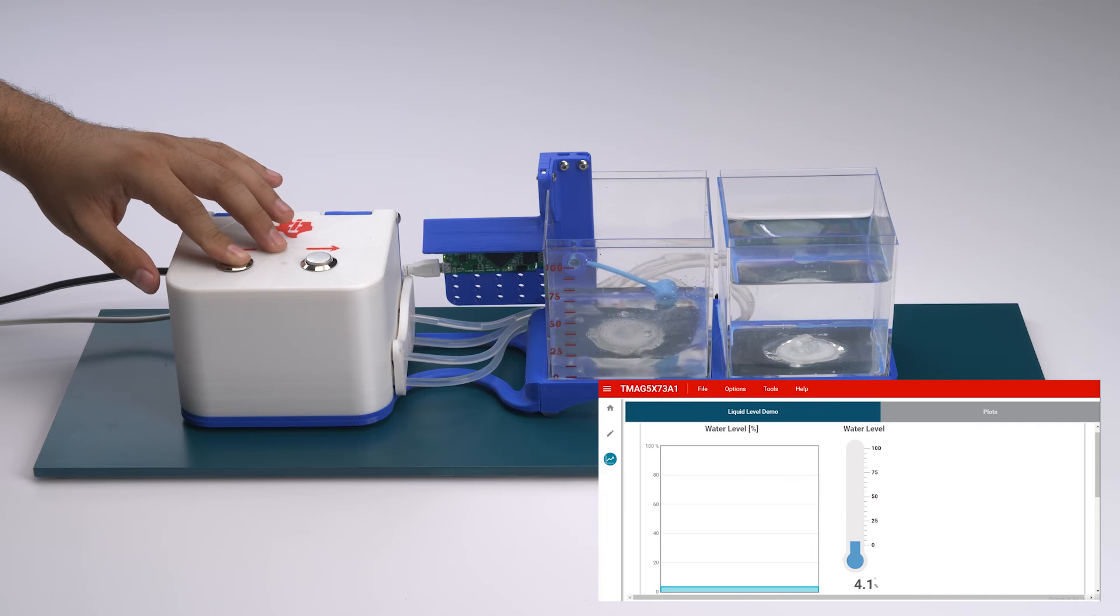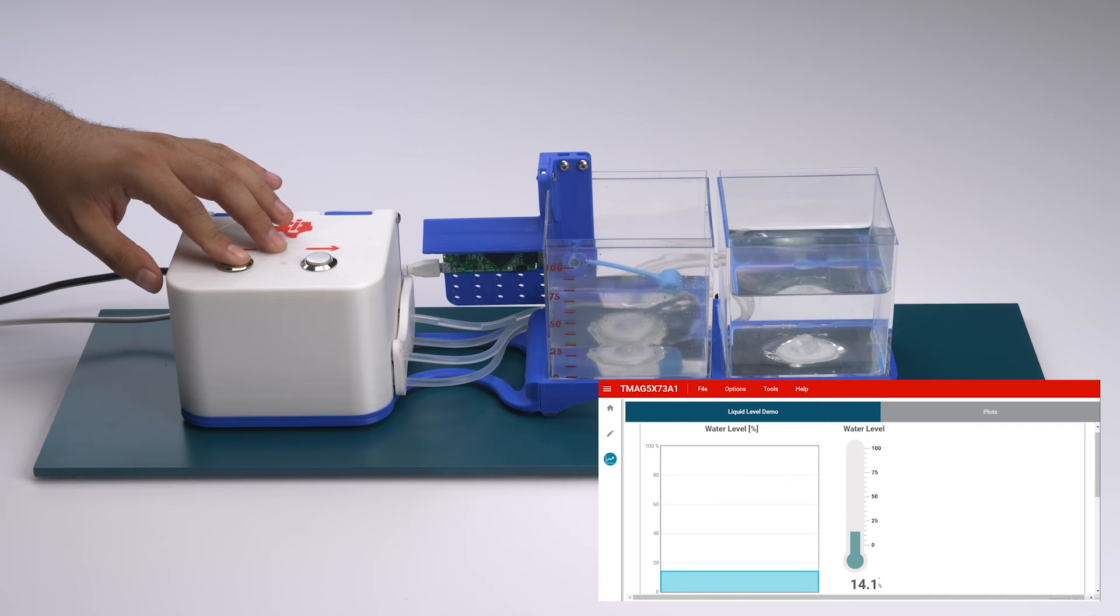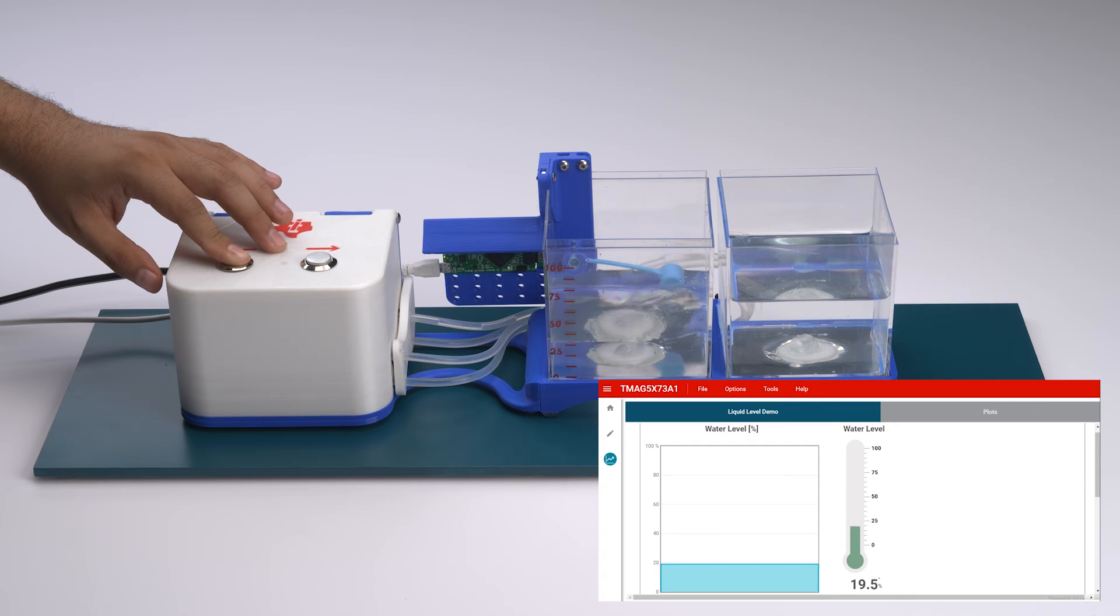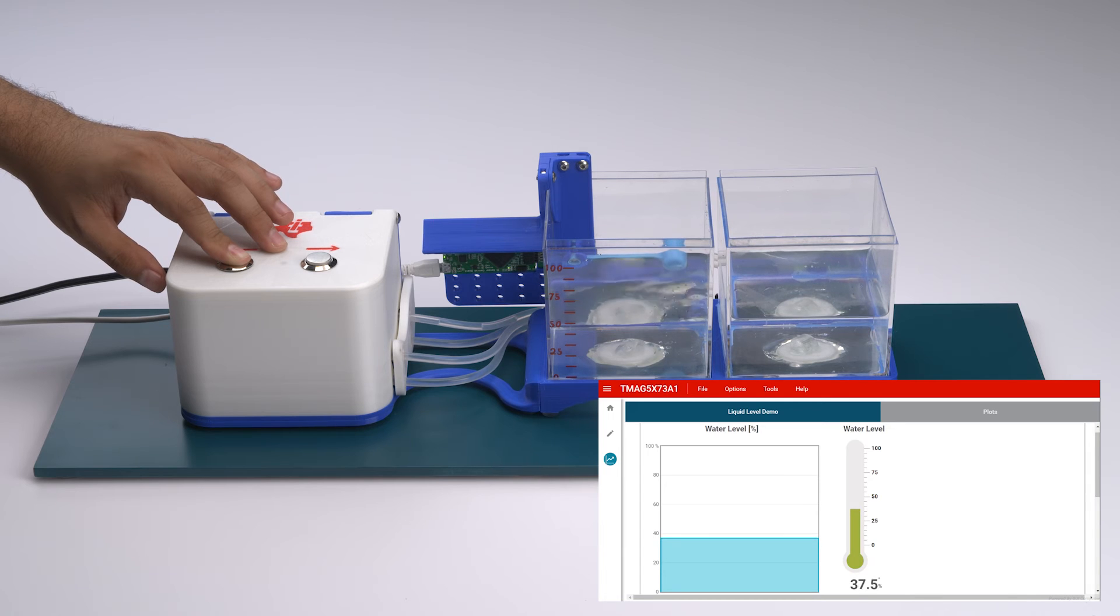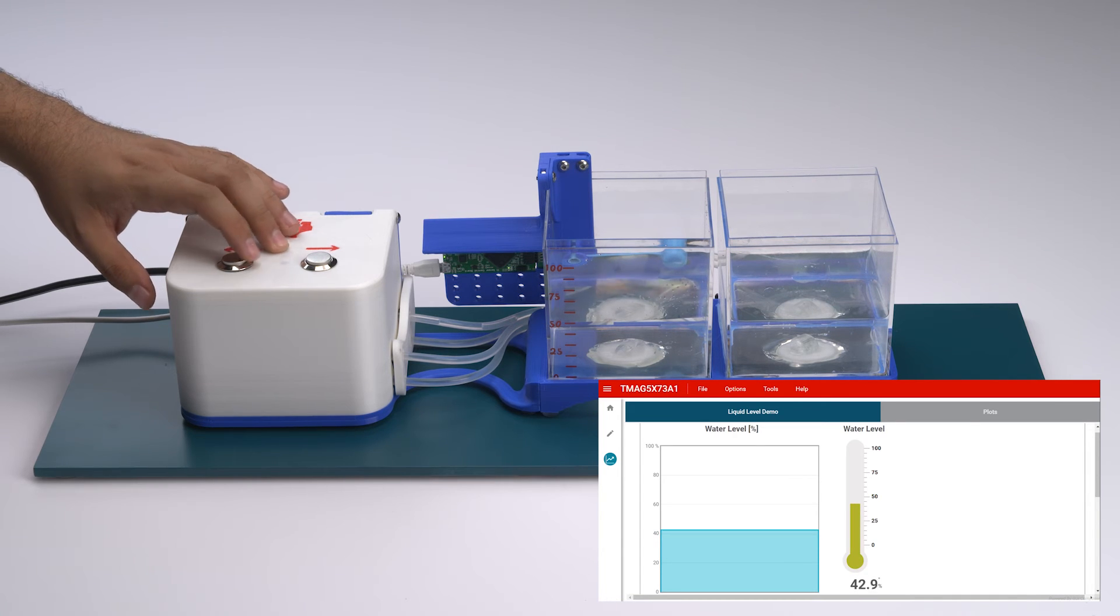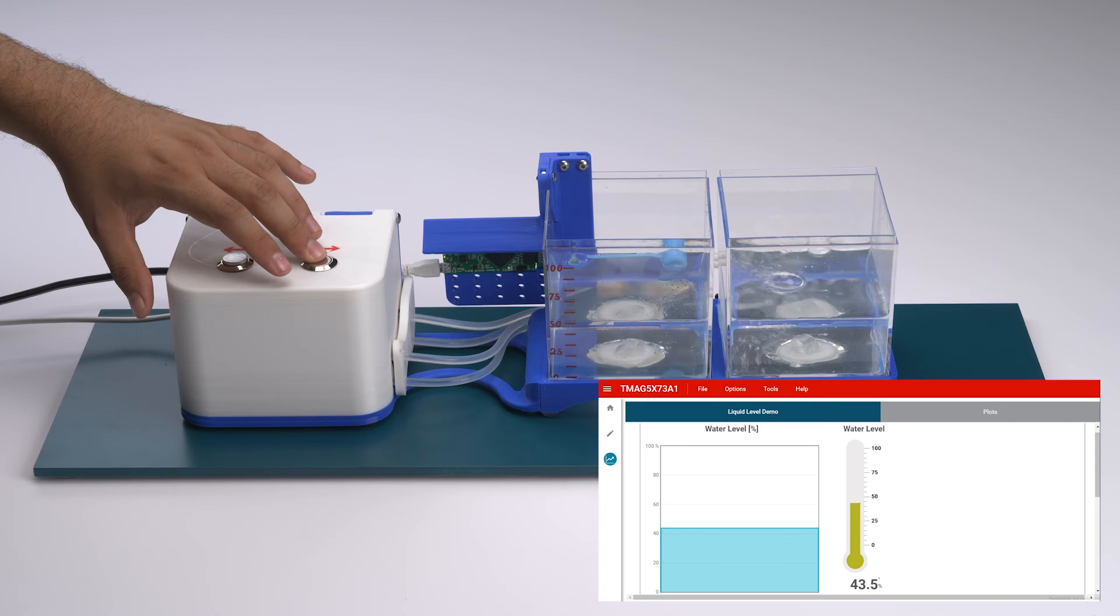As the water level rises, the float arm rises along with the liquid inside the tank, causing the magnet attached to rotate. Since the tank is made out of plastic, the magnetic fields generated by the magnet are able to penetrate through the tank, allowing us to place the Hall effect sensor outside of the tank.